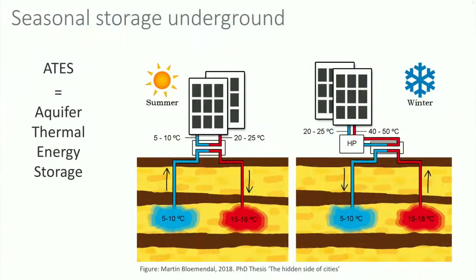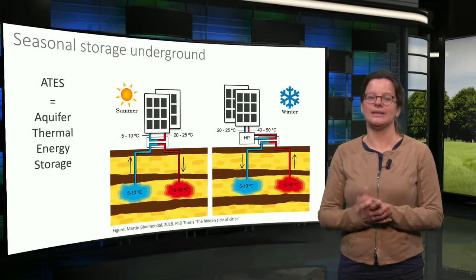In winter the reverse happens. Warm water from the warm well is extracted to be used for heating the building. Since the water storage usually has a maximum temperature of 25 degrees, a heat pump is used to further upgrade the temperature. The cooled groundwater is injected into the cold well again. On an annual basis, the heat and cold extracted must be in balance.